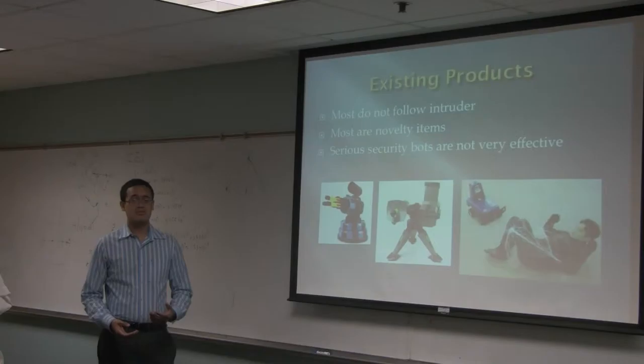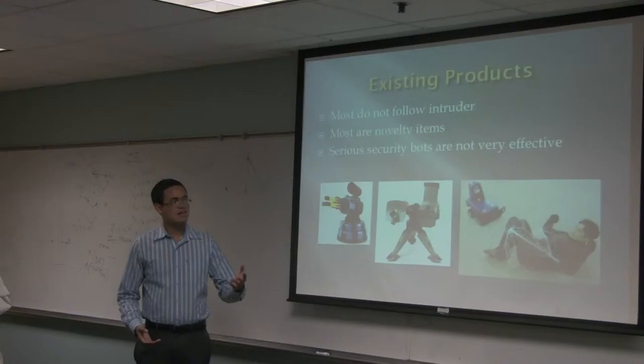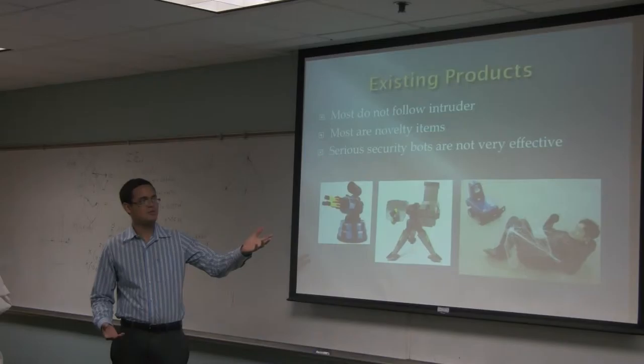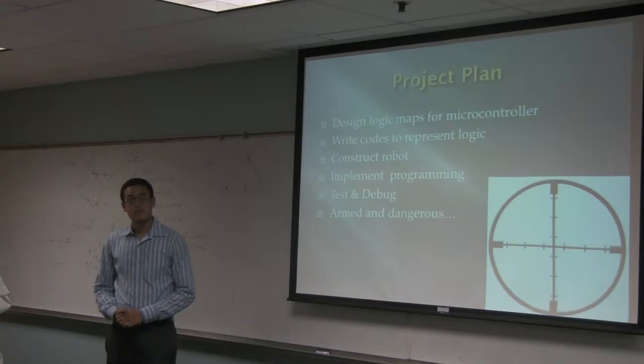So we looked through some existing products. We found that most of them do not follow an intruder. They're generally novelty items as the first two. The final one is actually a real security robot. Most of them are very effective. As you can see in the image, it's using a very small net. This is mostly for promotional purposes. If you wanted to, you could stand up and just walk away. So it's not very effective.